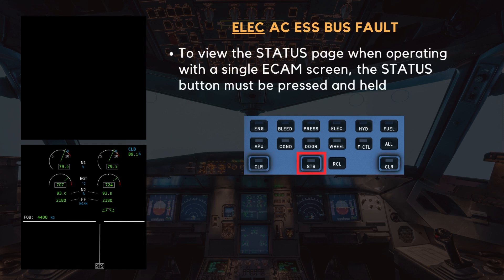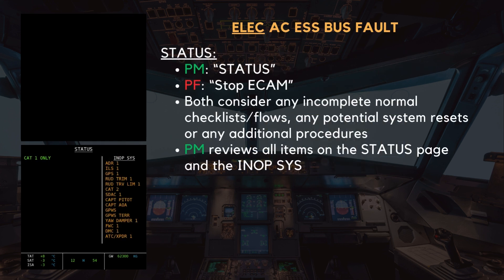To view the status page when operating with a single eCAM screen, the status button must be pressed and held. Status — Stop eCAM. At this point, both crew members consider any normal checklists or incomplete flows, any potential system resets, or any additional procedures that are applicable. On the status page, we are now CAT 1 only.